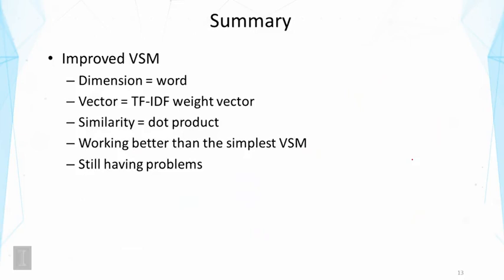So to summarize this lecture, we've talked about how to improve the vector space model. And we have got the improved instantiation of the vector space model based on TF-IDF weighting. So the improvement mostly is on the placement of the vector, where we give higher weight to a term that occurred many times in the document, but infrequently in the whole collection. And we have seen that this improved model indeed works better than the simplest vector space model. But it also still has some problems. In the next lecture, we're going to look at how to address these additional problems.